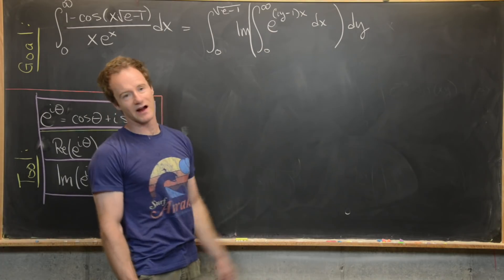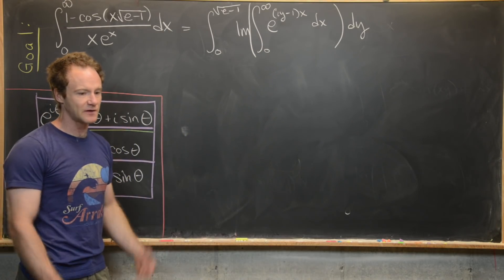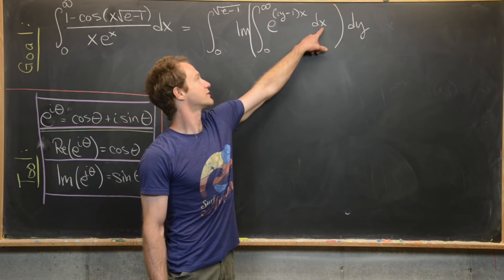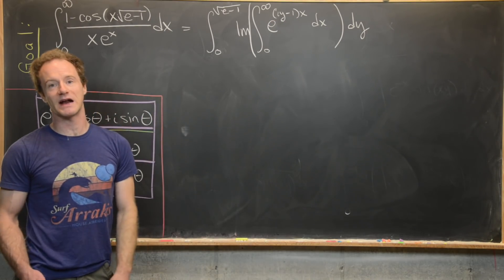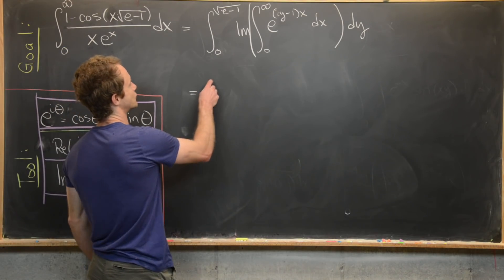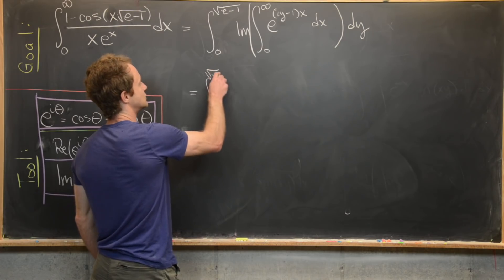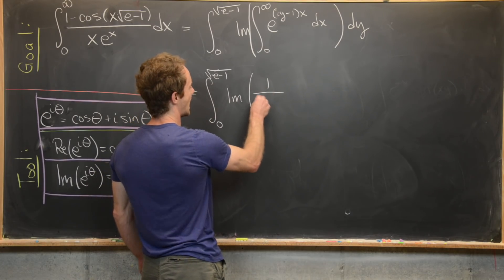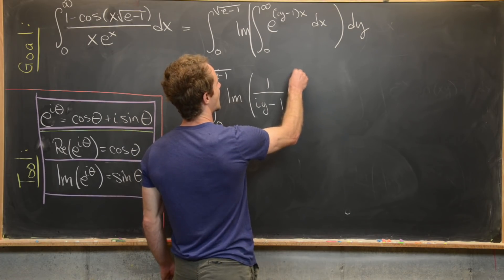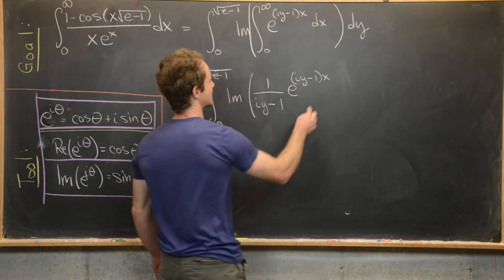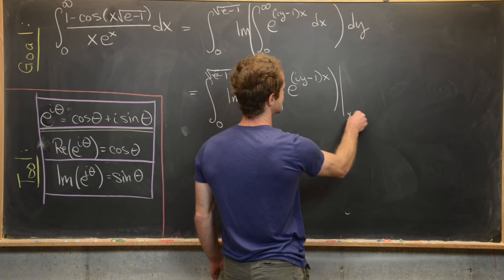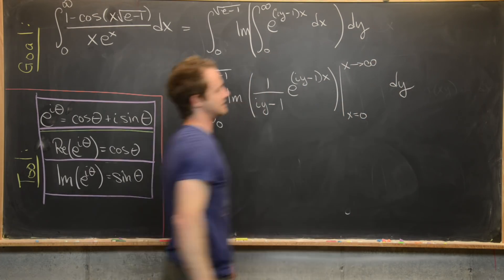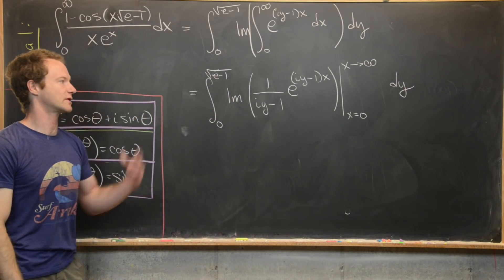On the last board we worked the goal integral down to this form: the integral from zero to root e minus one of the imaginary part of the integral from zero to infinity of e to the quantity iy minus one times x, dx dy, after a little arithmetic in the exponent. The antiderivative of an exponential is essentially itself divided by the constant in the exponent. Here, with respect to x, the quantity iy minus one is a constant, so we get one over iy minus one times e to the iy minus one times x, evaluated from x equals zero to x approaching infinity, then dy.